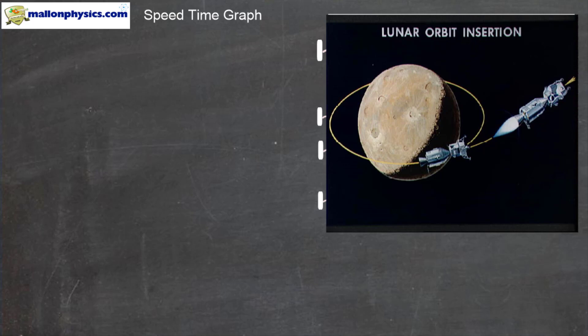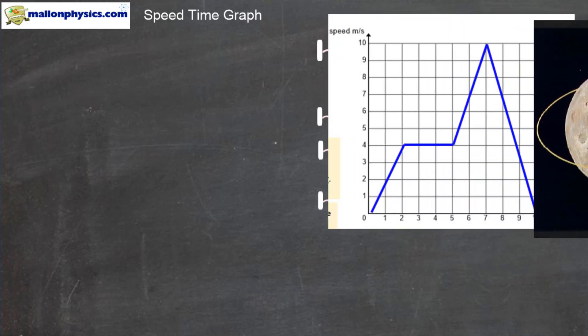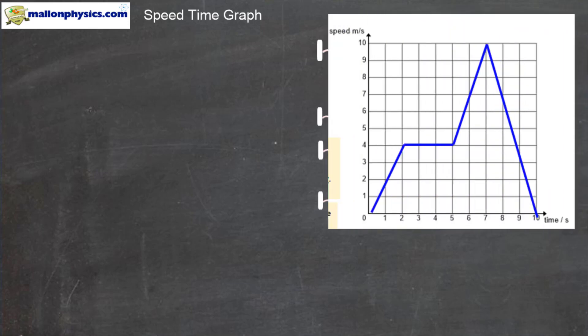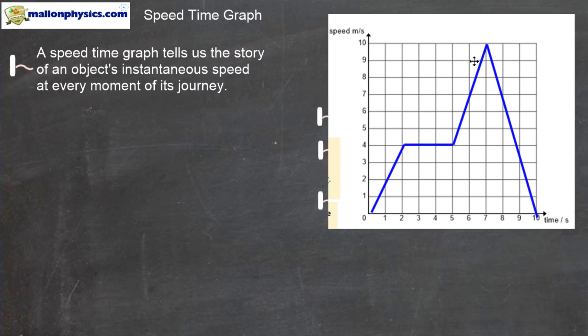Space scientists who track space flights of missions to Mars, the moon, or the planets in the solar system need to know the instantaneous speed of the spacecraft at any given moment in its flight. This data is usually displayed visually in the form of a graph called a speed-time graph. A speed-time graph shows the instantaneous speed of an object — that is, the speed of the object at that particular moment in time. A speed-time graph tells us the story of an object's instantaneous speed at every moment of its journey.